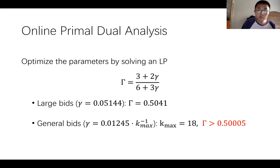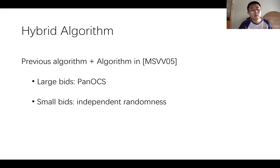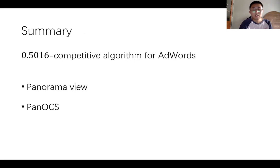Subject to these conditions, we solve a linear program to maximize gamma and get a competitive ratio of 0.50005 for general bids, where there is a 0.01245 times 1 over k_max pan-OCS. To get our final result, we propose a hybrid algorithm combining the strengths of the basic algorithm for large bids and the strengths of the algorithm by Mehta, Saberi, Vazirani and Vazirani for small bids, yielding a 0.5016 competitive algorithm.